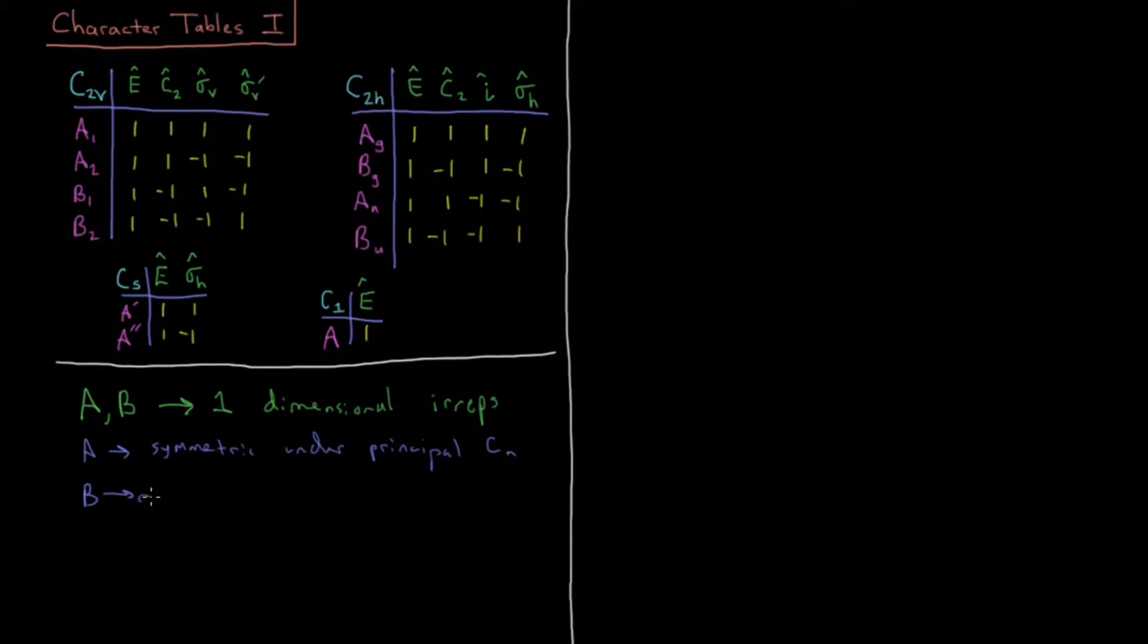And B groups are anti-symmetric under rotation of the principal axis. So B1 and B2 here for C2v, under the rotation C2, they are anti-symmetric. They give you a minus 1. You return the negative of yourself if you do a C2 rotation for a B1 or B2 irrep. C2H, if I have BG or BU, I get under C2 minus 1 as well.